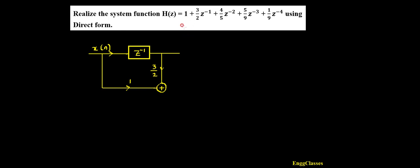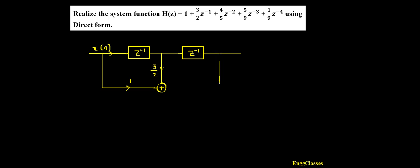Next it is quite simple. I need to get another delay element, so let me get one more delay element here and proceed further. Let me join these two points. I need 4/5 z⁻². For that I again extend this straight line, and here I'm going to multiply with 4/5 — that is 4/5 z⁻². I have to add that with the previous signal, so I must have an adder again at this point. That gets added with the previous signal.